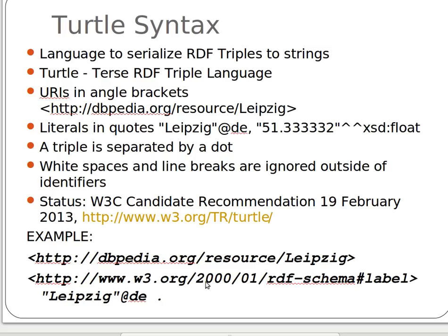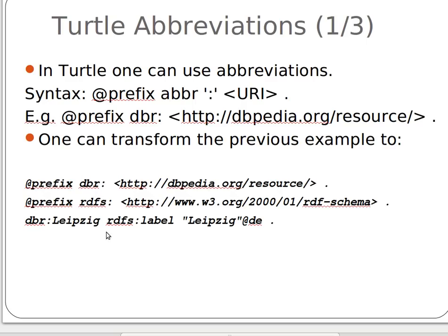The previous example — URI, URI, value — we can now use prefixes at the top of our Turtle file: @prefix dbr: with the URI dot, @prefix rdfs: with the URI dot. Then we can say 'dbr:Leipzig', placing it as you can see here.